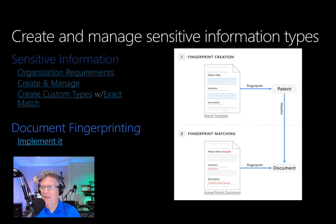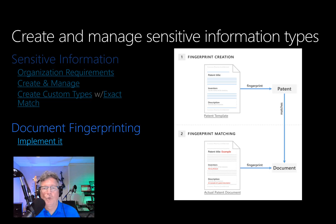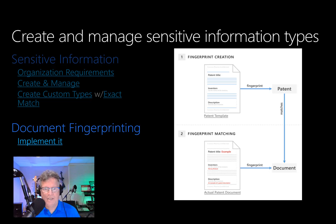Optionally, you can set up policy tips to notify senders that they might be sending sensitive information, and the senders should verify that recipients are qualified to receive the patents. This process works with any text-based forms used within an organization. Note that you can currently create a document fingerprint only by using PowerShell in the Security and Compliance Center. Make sure to check out the link in the blog to review the PowerShell commandlets, because for this type of exam, creating and implementing is always a possibility.